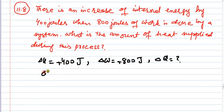Delta U is equal to delta Q minus delta W. Delta Q is equal to delta U plus delta W.